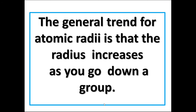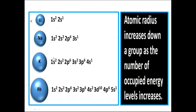The general trend for atomic radii is that the radius increases as you go down a group. Observe this diagram showing the first main group: lithium, sodium, potassium, and rubidium. Lithium has two shells, sodium has three shells, potassium has four shells, and rubidium has five shells. The number of shells increases gradually as we move from top to bottom within a group, so atomic radius increases down a group as the number of occupied energy levels increases.